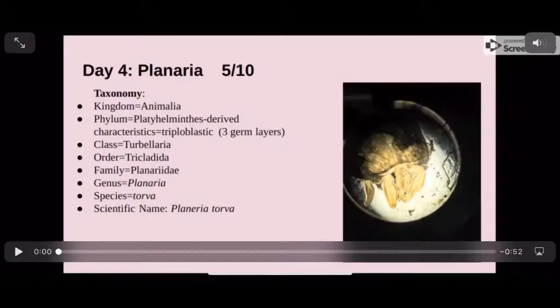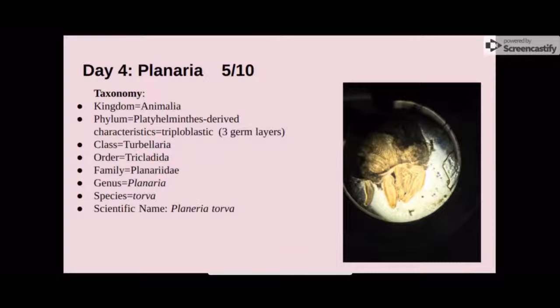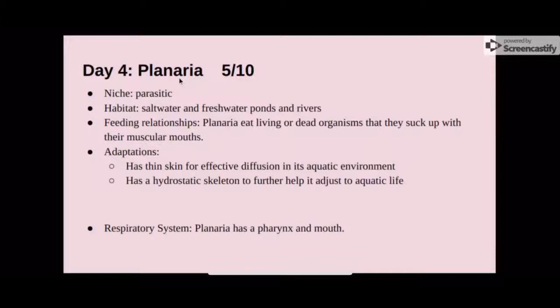The next organism we looked at was the planaria. Its derived characteristic is triploblastic, meaning it has three germ layers. Its scientific name is Planaria torva. In the picture on the right, we can see a section that is in the process of regeneration. The niche of the planaria is that it is parasitic. Its habitat is saltwater and freshwater ponds and rivers. Its feeding relationship is that it eats living or dead organisms, sucking them up with its muscular mouth. Its adaptations include thin skin for effective diffusion in its aquatic environment and a hydrostatic skeleton to further help it adjust to aquatic life. The respiratory system of the planaria is made up of the pharynx and mouth.